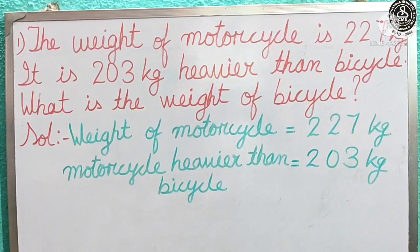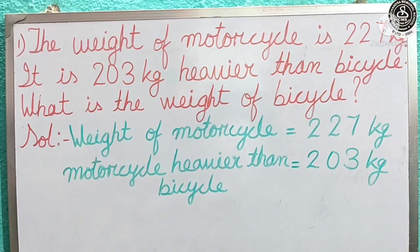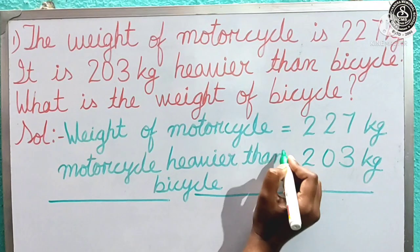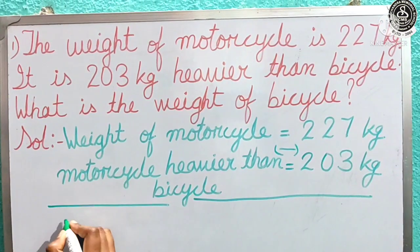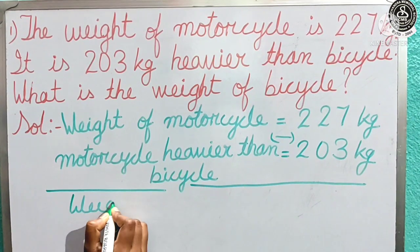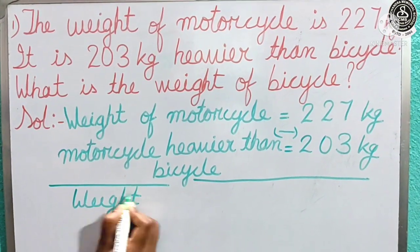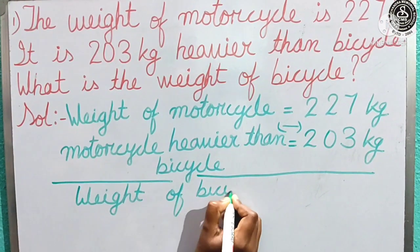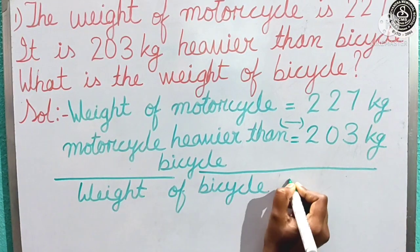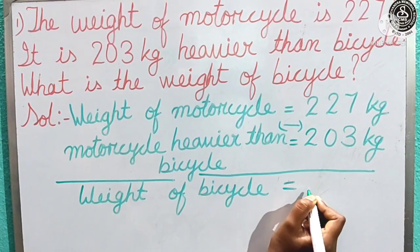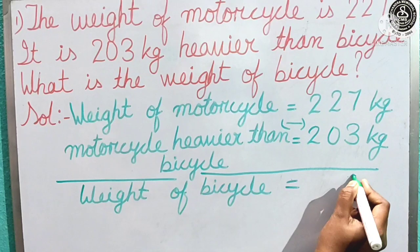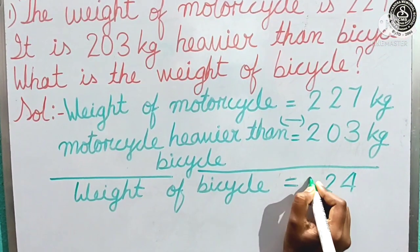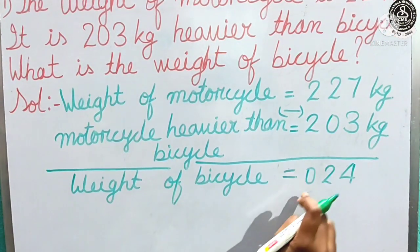Now we have to find out the weight of the bicycle. For this we have to do the subtraction. We will draw one line here and give the subtraction sign. We are finding the weight of bicycle, so we will write: weight of bicycle equal to. Now let us do the subtraction. 7 minus 3 is 4. 2 minus 0 is 2. And 2 minus 2 is 0.